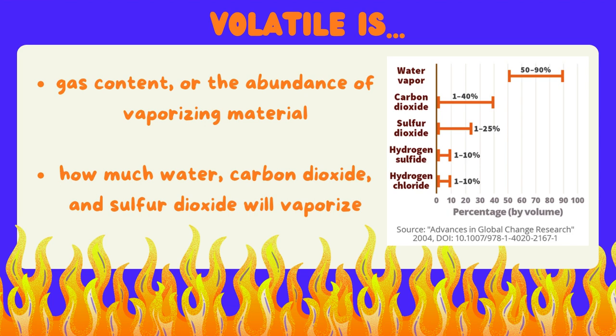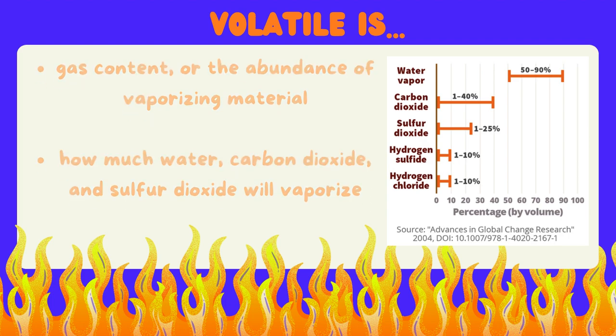Volatile is gas content, or the abundance of vaporizing material in a volcano. It's how much water, carbon dioxide, and sulfur dioxide will vaporize inside of the volcano. This image is showing the percentage of different vaporizing materials found in volcanoes.